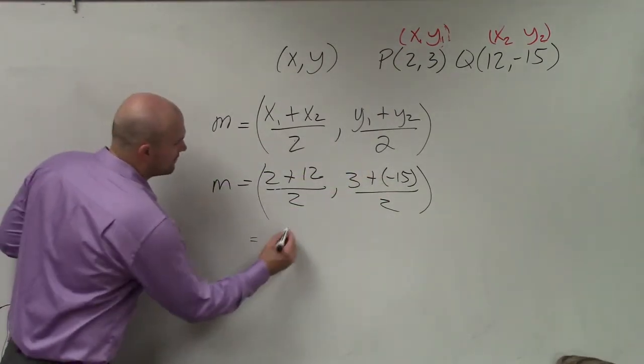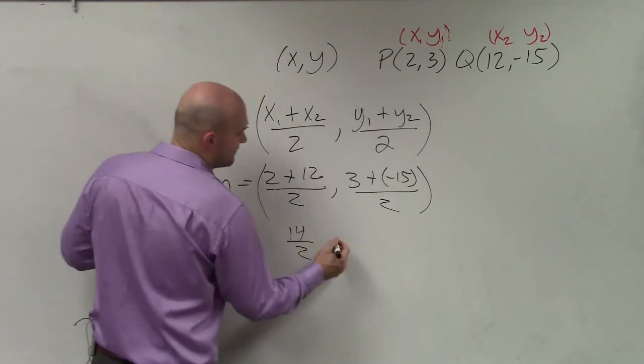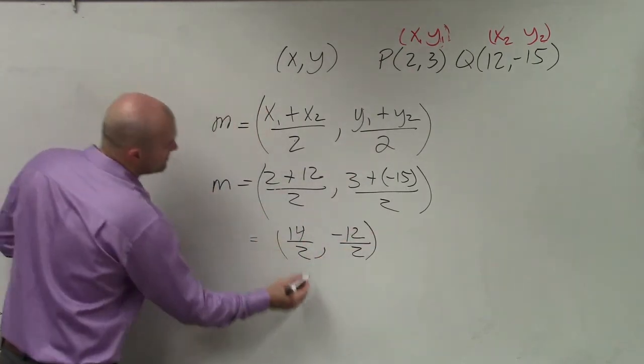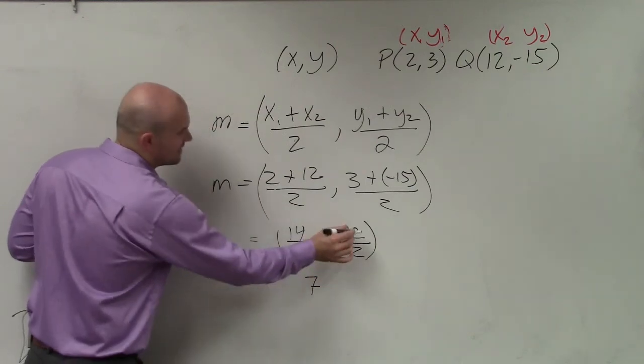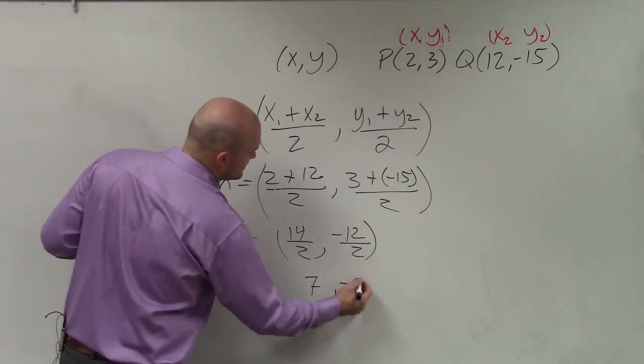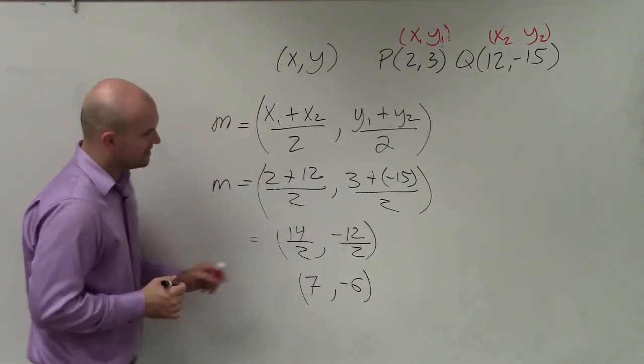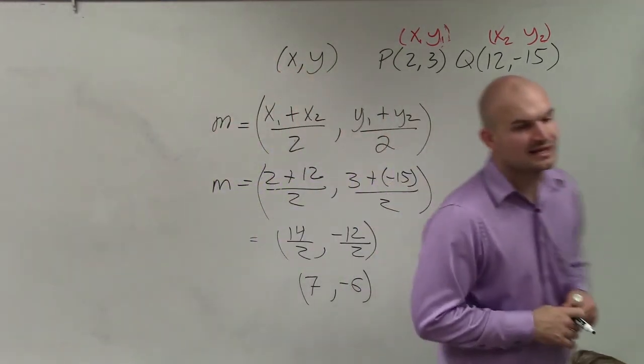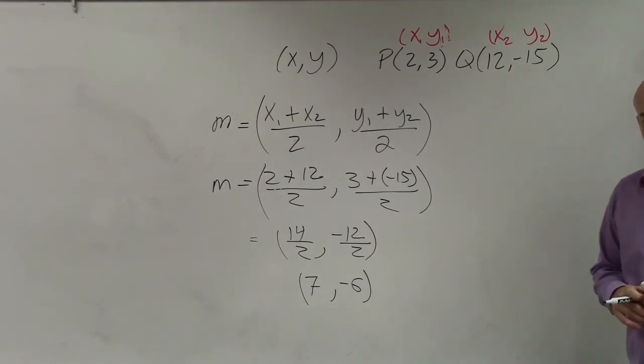Well, 2 plus 12 is going to be 14 over 2, comma, 3 plus negative 15 is negative 12 over 2. 14 divided by 2 is 7, negative 12 divided by 2 is negative 6. That's negative 12, what did I say? Negative 12, okay. Negative 12 divided by positive 2 is negative 6. Cool.